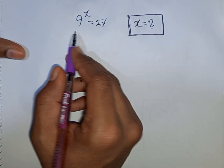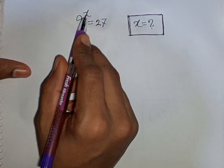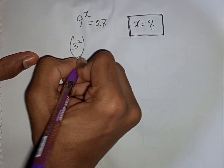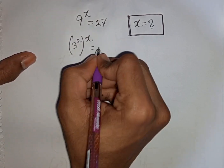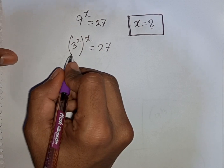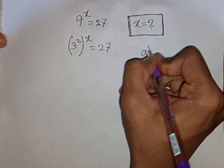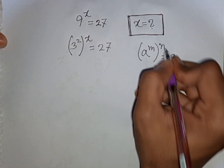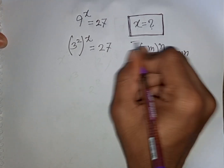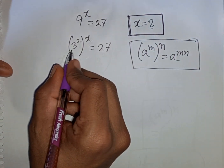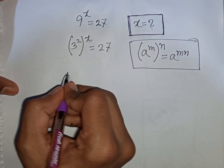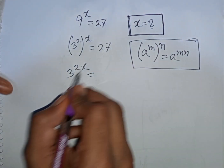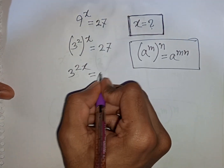Now I will solve the exponential equation 9 power x is equal to 27. Find the value of x. We have 9 power x, which is the same as 3 power 2, bracket power of x, is equal to 27. Here we can apply the exponential rule that a power m bracket power n is equal to a power of m times n. According to this formula, 3 power 2 bracket power x equals 3 power of 2 times x, that means 2x. Now 27 can be written as 3 power 3.